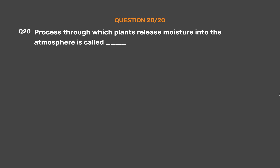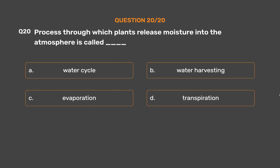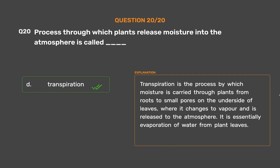Question number 20. The process through which plants release moisture into the atmosphere is called _____. Option A: Water cycle. Option B: Water harvesting. Option C: Evaporation. Option D: Transpiration. The correct answer is Option D: Transpiration. Transpiration is the process by which moisture is carried through plants from roots to small pores on the underside of leaves, where it changes to vapor and is released to the atmosphere. It is essentially evaporation of water from plant leaves.